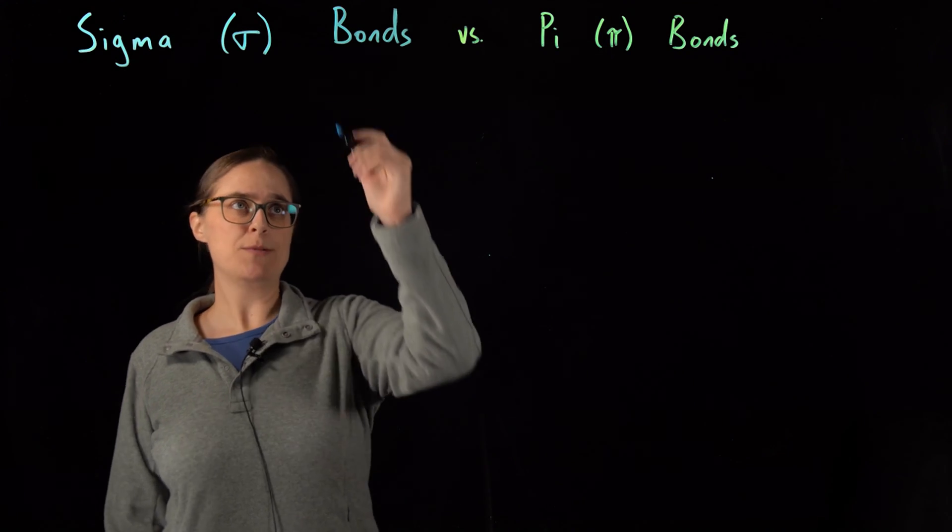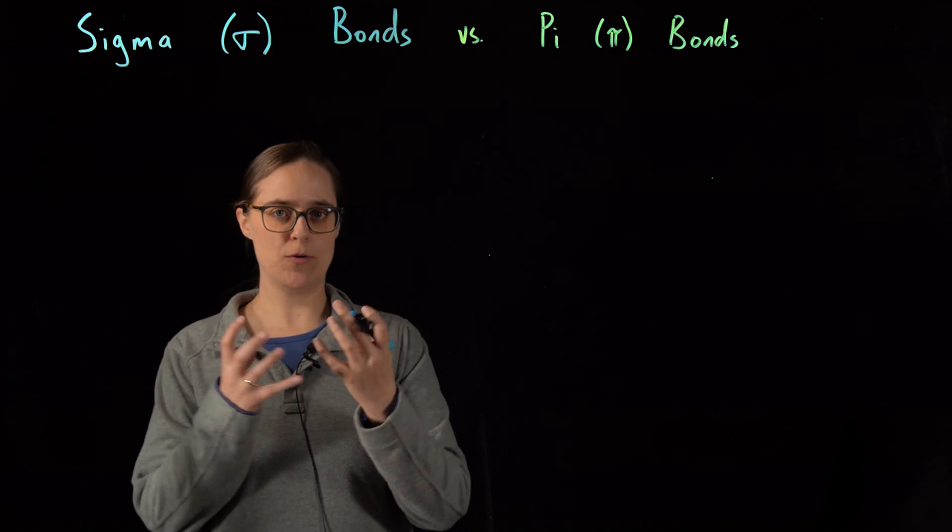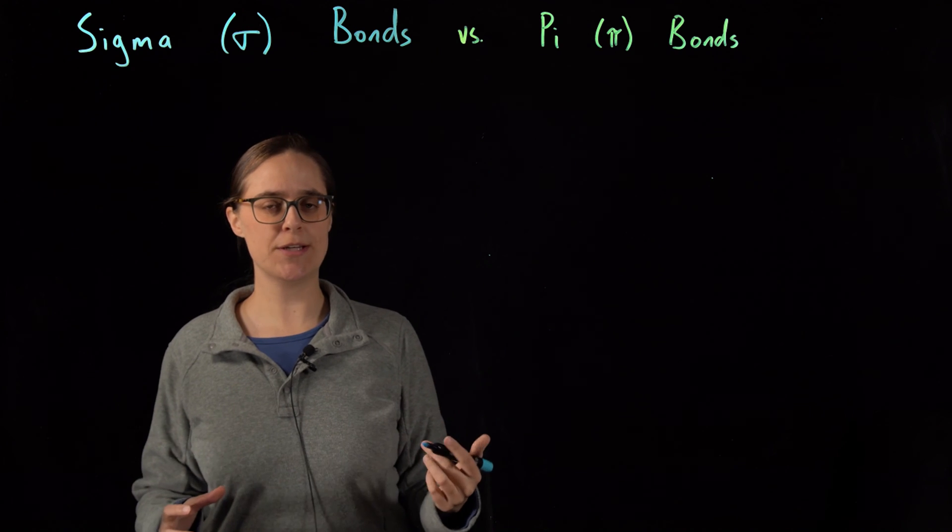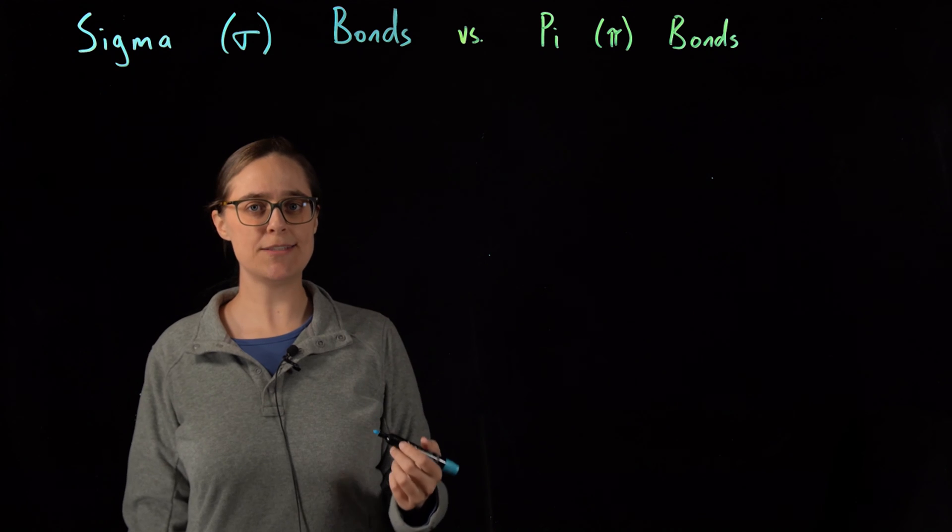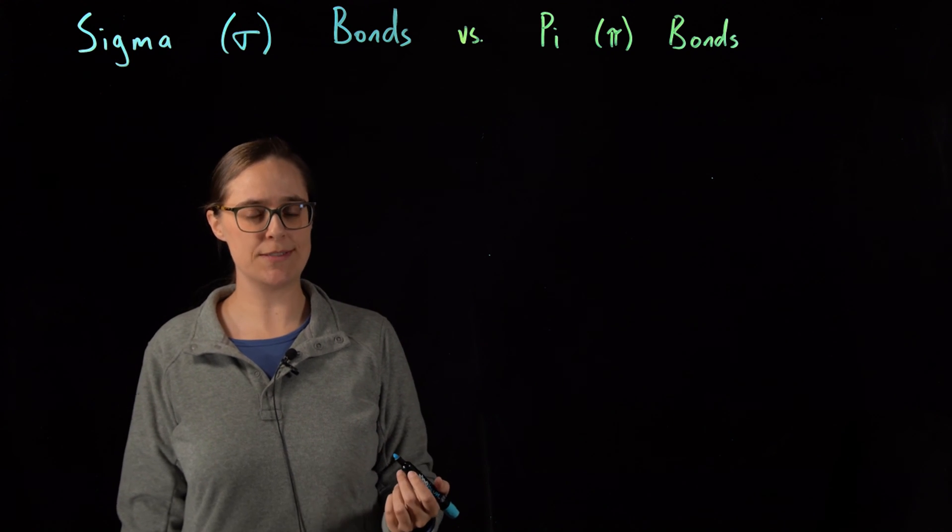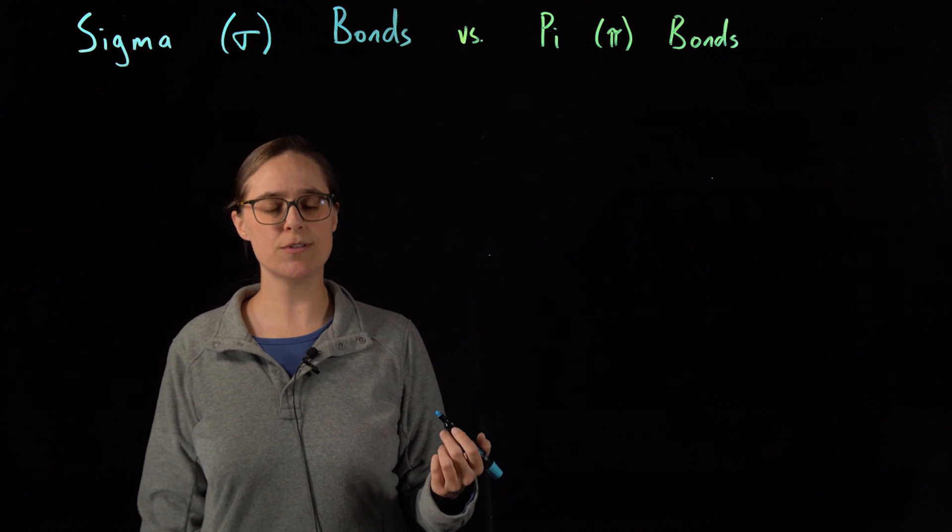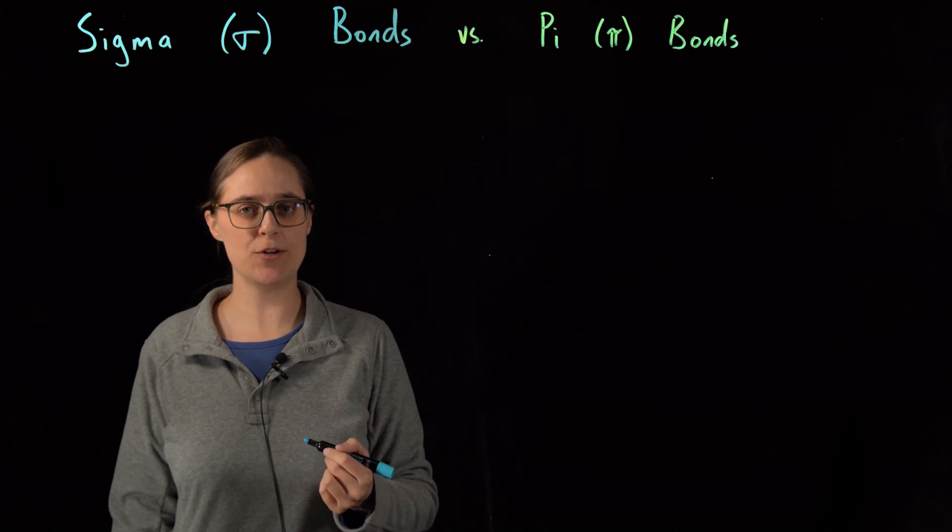I want you to understand the difference between sigma bonds and pi bonds. Electrons orbit the outermost part of atoms, and each electron has its own region of space or territory where it's most likely to be found. These territories are called orbitals. Orbitals come in different shapes and sizes, but if the orbitals of two different atoms overlap and share electrons, that's called a covalent bond.